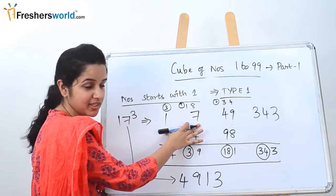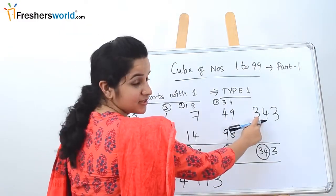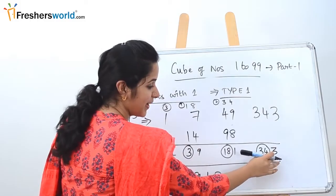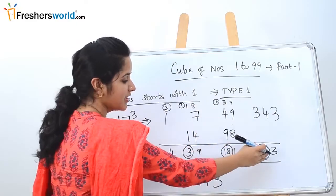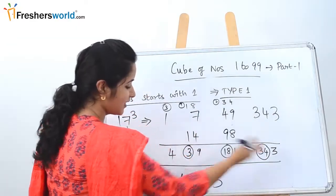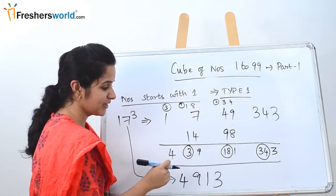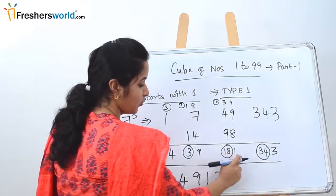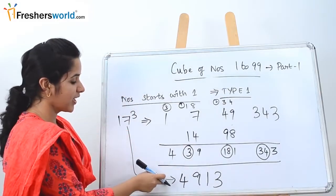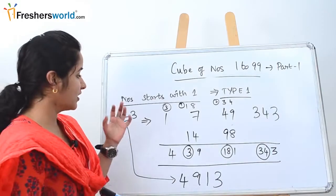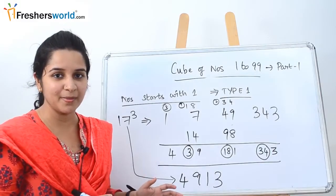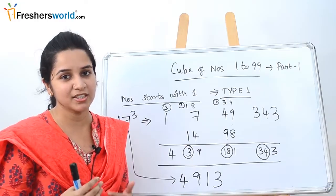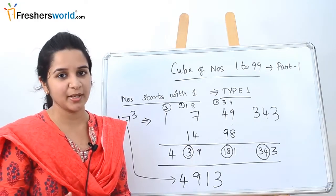So for 17 cubed: write 17, square it to get 49, cube it to get 343. The last digit always remains; the rest carry over to the next place, working from right to left. The digits not in brackets give your answer: 4913. Similarly, you can solve all other numbers starting with 1 in the same manner, and once you practice you can do it within seconds.